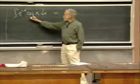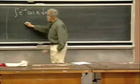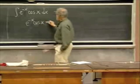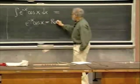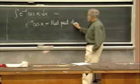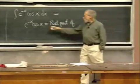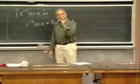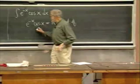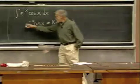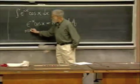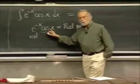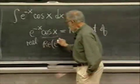How do I think of this? Cosine x. What I do is think of e to the negative x times cosine x as the real part. Cosine x is the real part of e to the ix. So this is real, but I'm thinking of it as the real part of e to the ix.